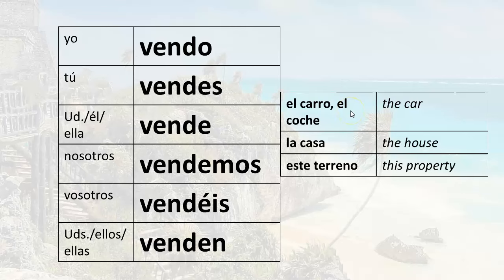He sells the car or he is selling the car: él vende el carro, él vende el coche. He sells the house or he is selling the house: él vende la casa. He sells this property: él vende este terreno. She sells the car or she is selling the car: ella vende el carro, ella vende el coche. She sells the house: ella vende la casa. She sells this property: ella vende este terreno.